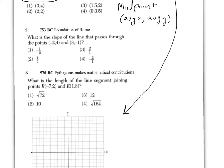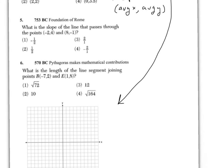For question number five, again, it's finding the slope. You could use the graph below to actually figure out the slope, or you could use the slope formula. The slope is the change in y's over the change in the x's.